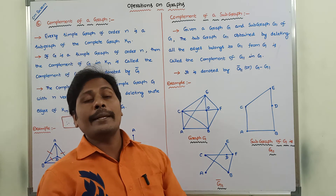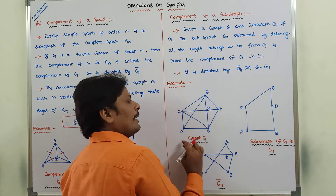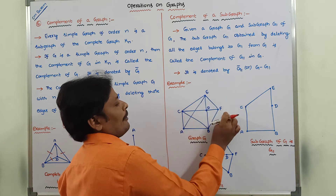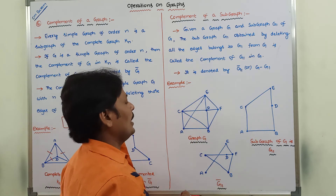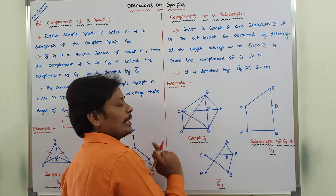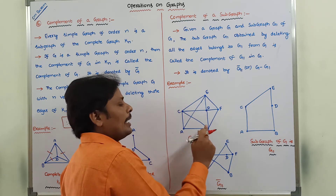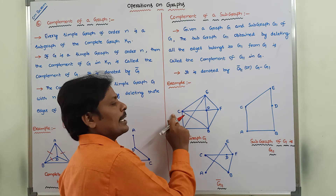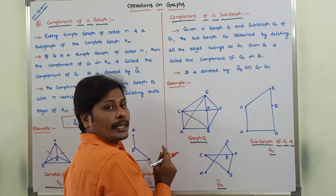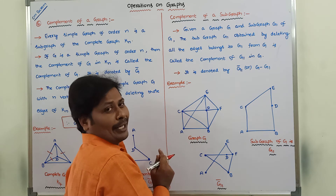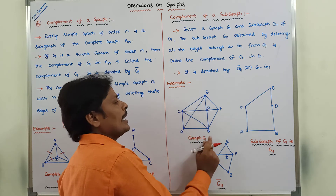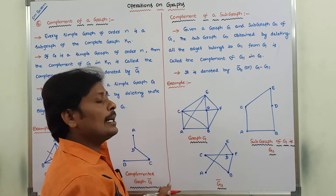Next, we go for the complement of a subgraph. This given graph contains six vertices: A, B, C, D, E, F. It is a simple graph because it does not contain any self-loops at each vertex, and there are no parallel edges between vertices. Hence, this is a simple graph with 6 vertices.